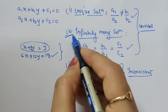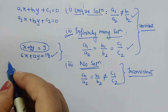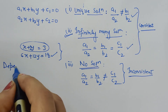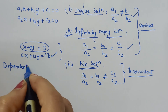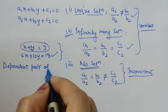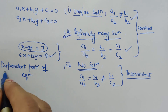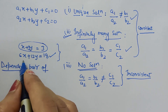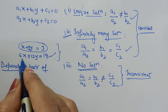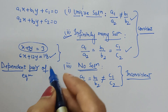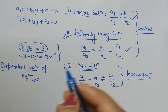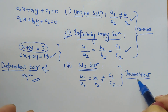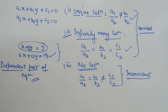Such pairs of equations are also called dependent pair of equations. They are called dependent because the second equation is dependent on the first equation by a multiple of 6. So these are the important keywords in this chapter under the conditions to check what type of solution we may get. Thank you.